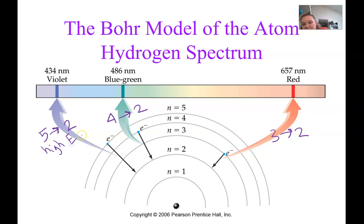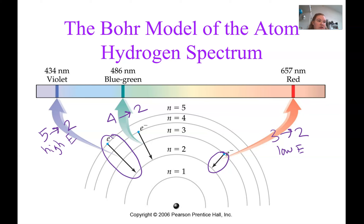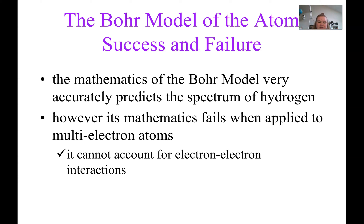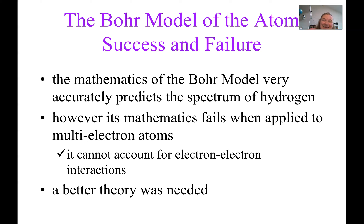This Bohr model is great but not perfect. It works really well for hydrogen, but once we incorporate atoms with two or more electrons — which is anything besides hydrogen — it starts to fail because it doesn't account for electron-electron repulsion. So we need a better theory, and we're going to talk about quantum mechanics.